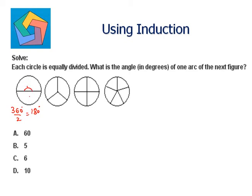Now in the second figure, there are three segments or three arcs. So 360 divided by 3, that's 90.